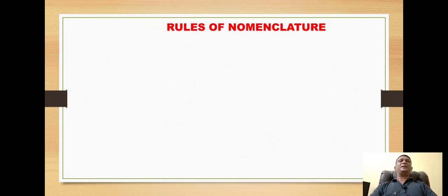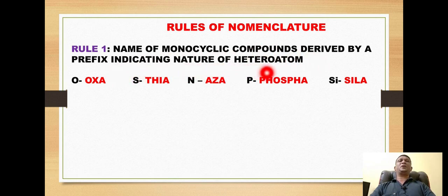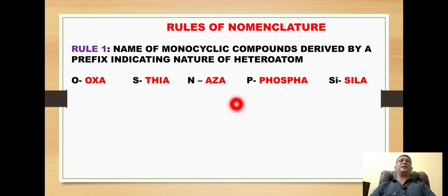There are some rules of nomenclature which, if we follow, make it very easy to give the IUPAC name to any heterocyclic compound. Rule number one is that the name of a monocyclic compound is derived by a prefix indicating the nature of the heteroatom. Please keep in mind that for naming a heterocycle, we have to use a combination of prefixes and suffixes.